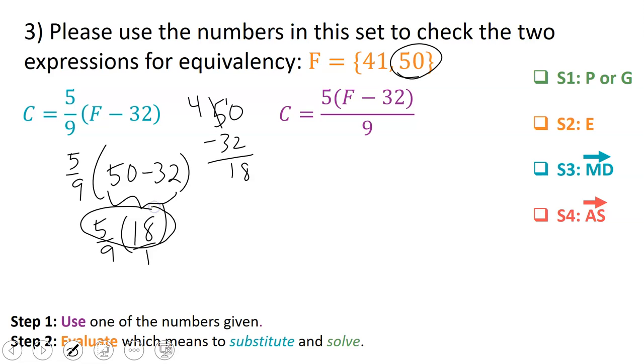Then I multiply 18 by 5. 8 times 5 is 40, 1 times 5 is 5 plus 4 is 9. So that would be 90 in the numerator and 9 in the denominator. 90 divided by 9 is 10. So what this is saying is that 50 degrees Fahrenheit is 10 degrees Celsius.